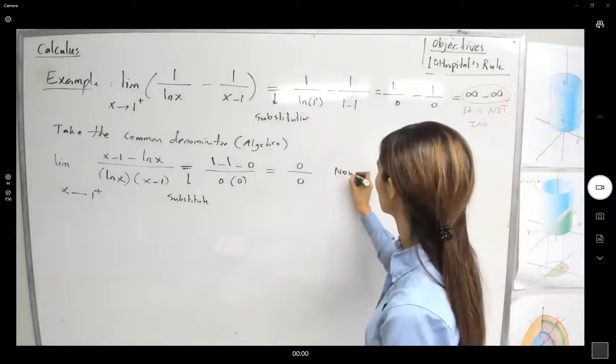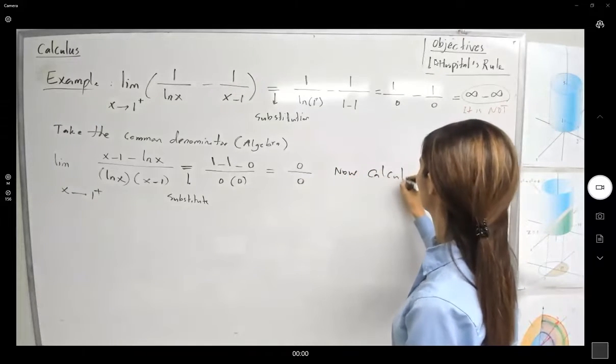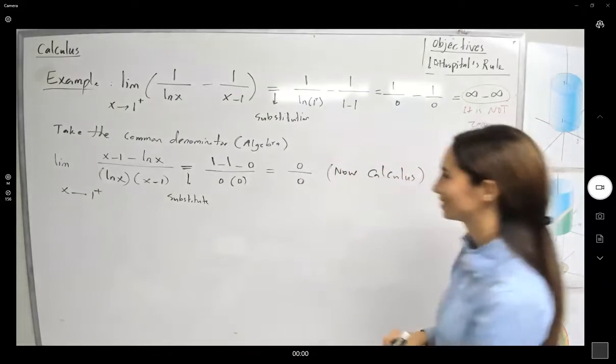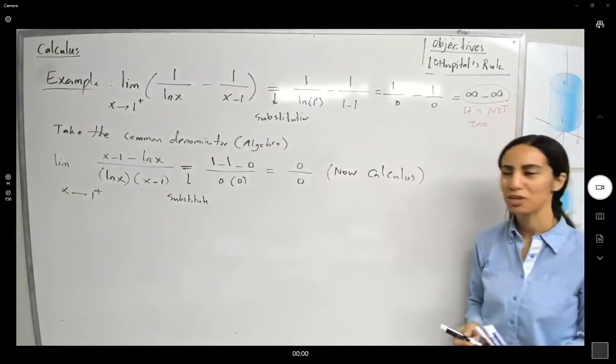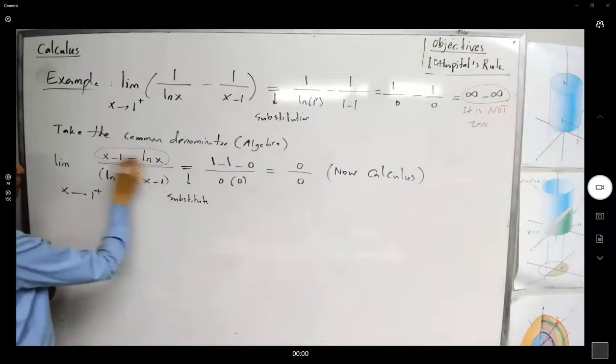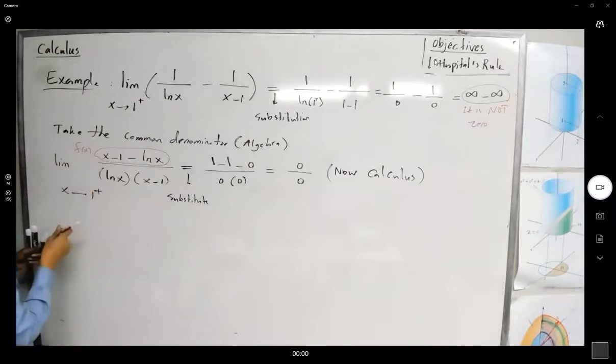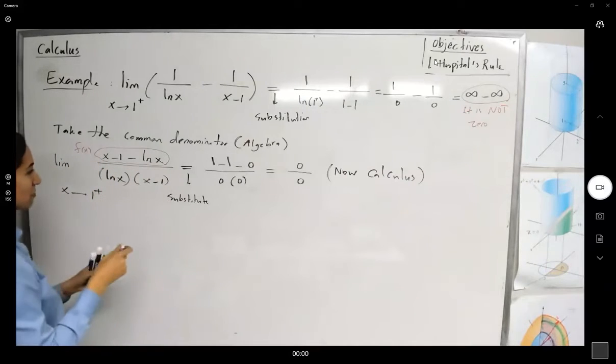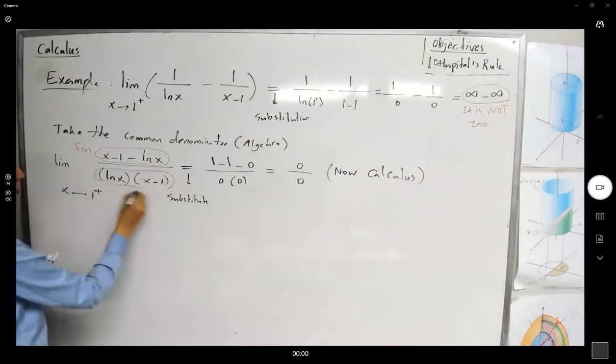Now we have to take the derivative of f, take the derivative of g, and then take the limit one more time. So this is f, and this is g, and you're taking the derivative.